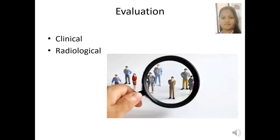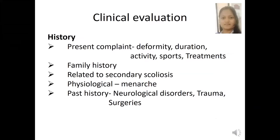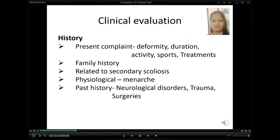My next part of the presentation will focus on evaluation, which can be divided into two types: clinical and radiological. Clinical evaluation should be done by history and examination. In the history and current symptoms analysis, it's important to ask about the deformity — who detected it, when it was first noticed, and about family members with the condition. This is important for diagnosis as well as to determine outcomes for treatment. Also note whether the patient has reached menarche, pubertal status, past history of neurological conditions, spinal trauma, and previous surgeries.